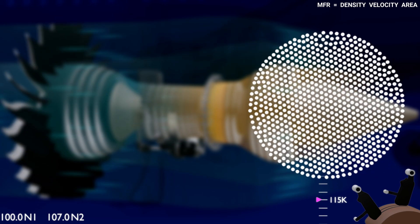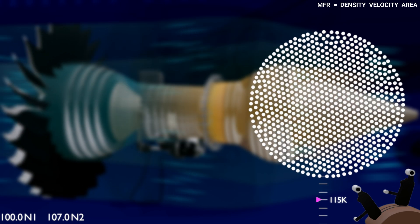The mass flow rate depends on three factors: density, velocity, and area of cross section.